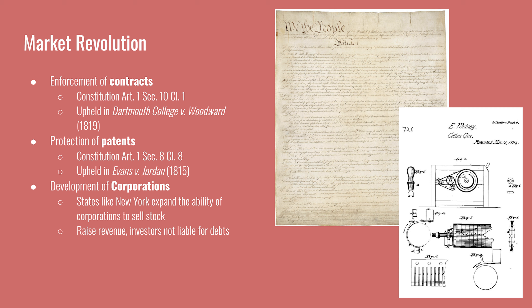In Article 1 of the Constitution, the states are denied the power to make any law that impairs the obligation of contracts. That means a contract must be upheld, and one may not be released from its obligations through a piece of legislation. States or any other private party cannot get in the way of a private contract.